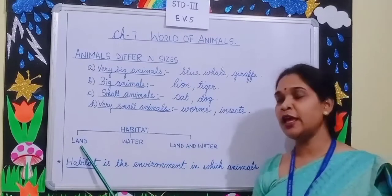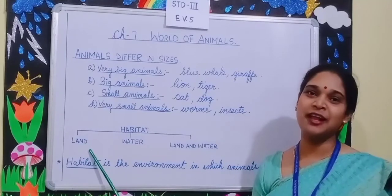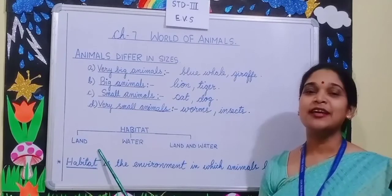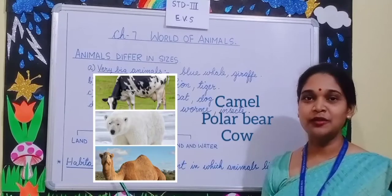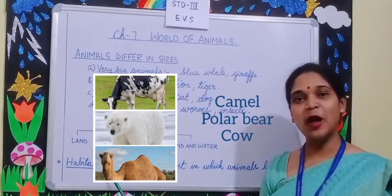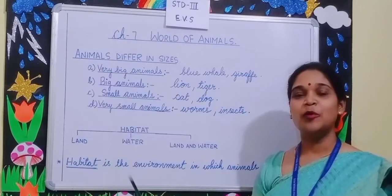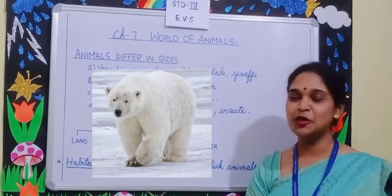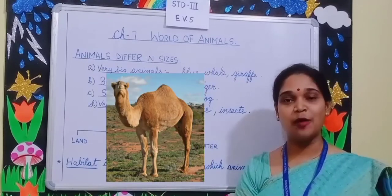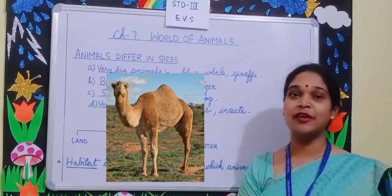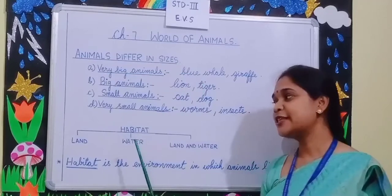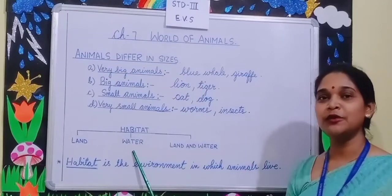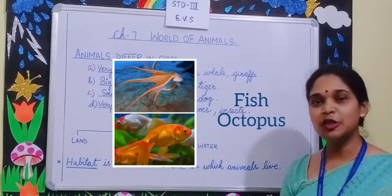Can you name a few animals that live on land, children? Like camel, polar bear, cow. Polar bear lives in cold mountains. Camels live in desert. Some water animals include fish and octopus.